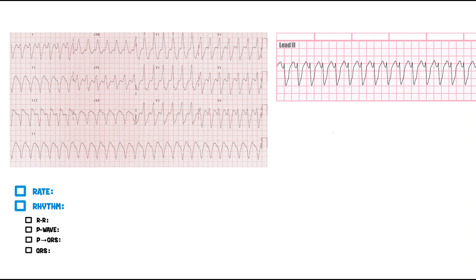Let's keep using the rate, rhythm, and all the steps for these EKGs — it'll be so repetitive you'll be able to do this in your sleep. First thing: rate. Go to the rhythm strip. This is going fast, so find where a deflection lands on a nice box line and count the boxes. I got two boxes, so 300 divided by 2 is 150 beats per minute.